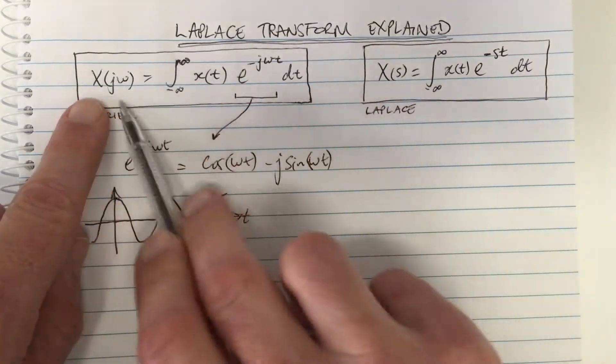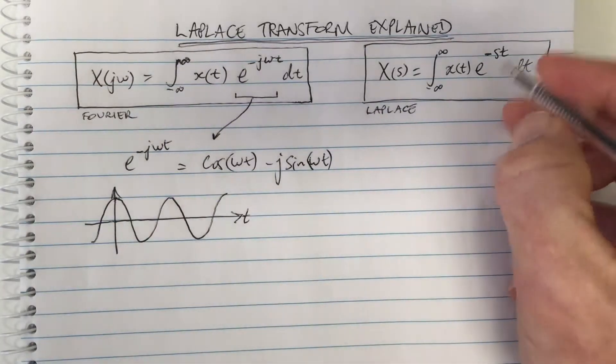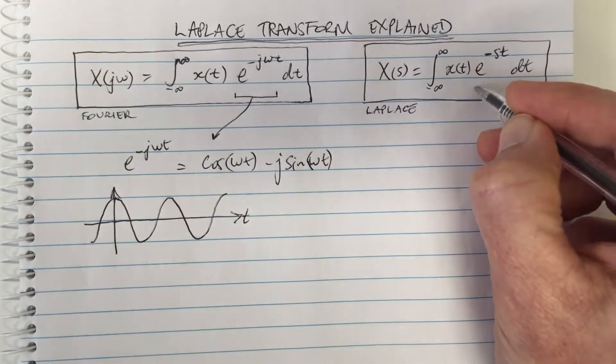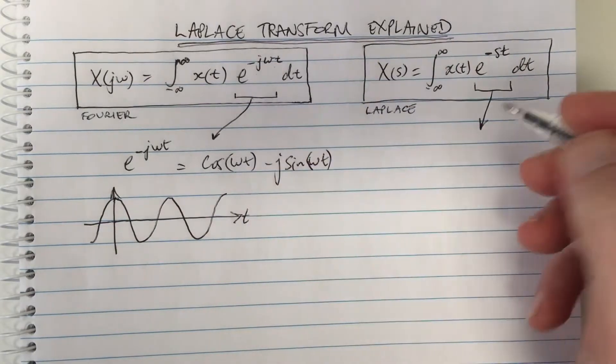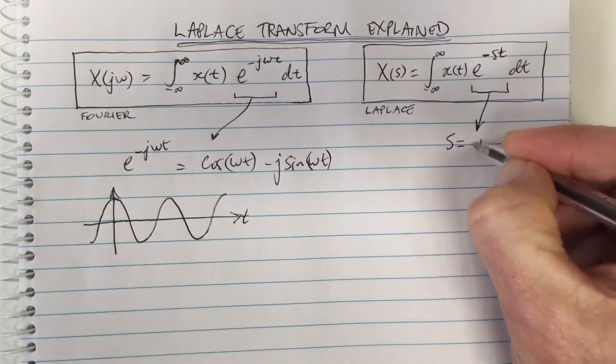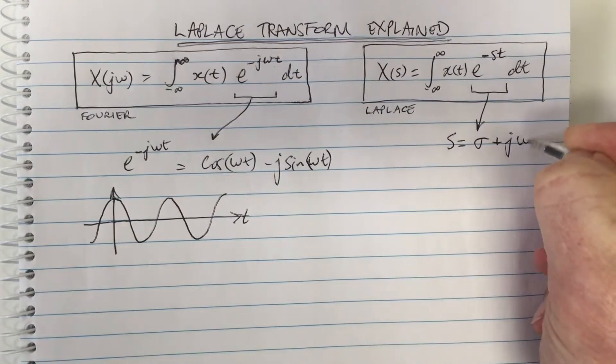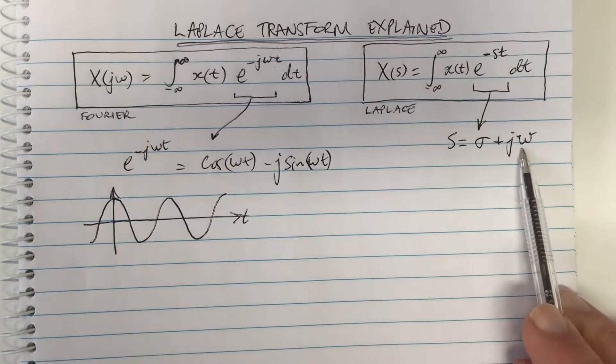You can see the equation is almost exactly the same, but for our basis function we now have an s where there is a jω, and s is a complex number which involves jω, so it's a generalization.